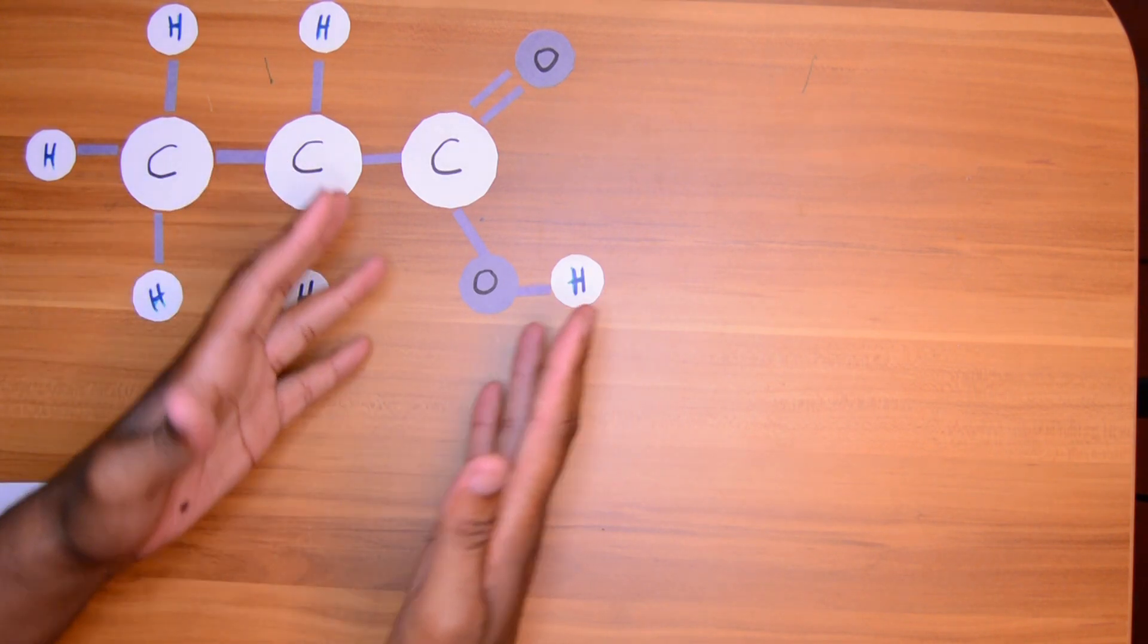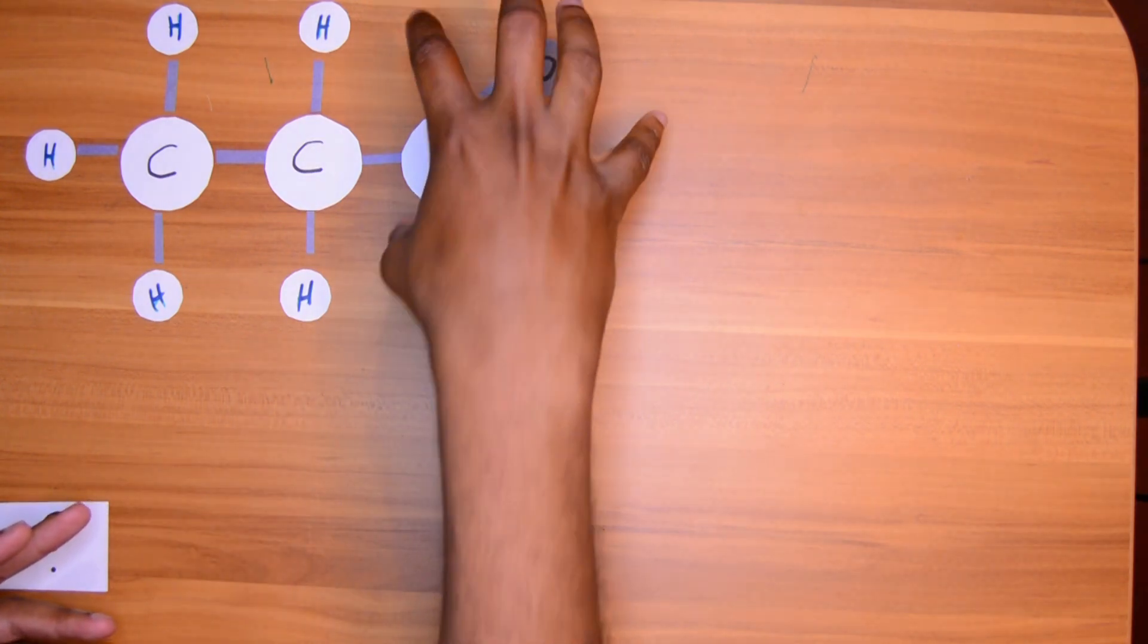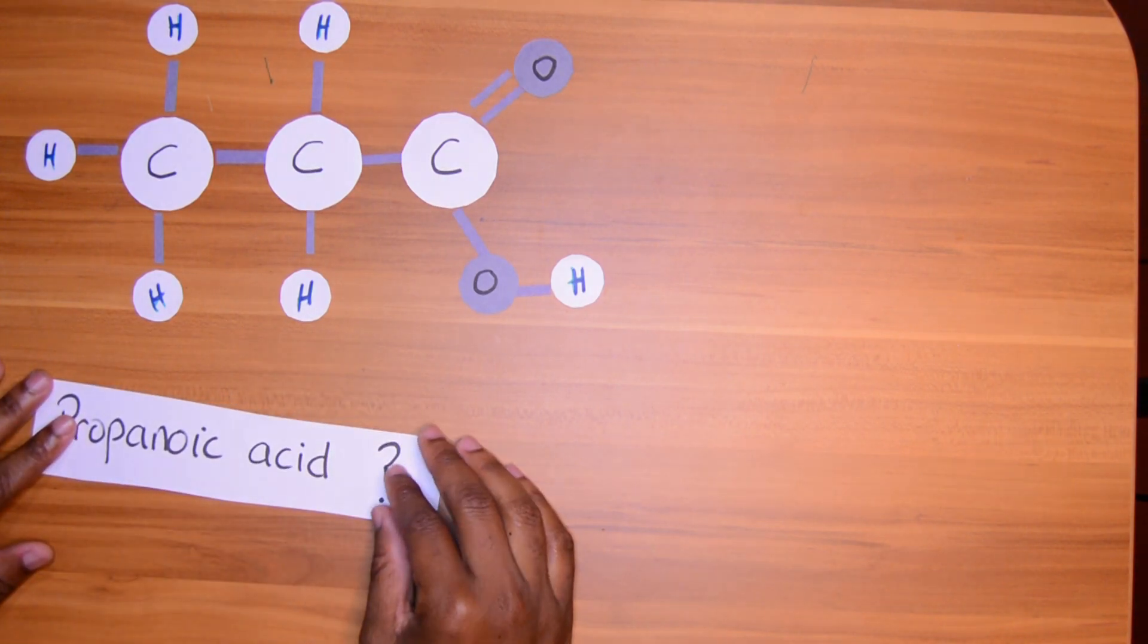That is the functional group for this molecule. This makes it who it is. This gives it character. And we will talk more about that in the next video. For now you can settle it that this group here makes it an acid and specifically propanoic acid.